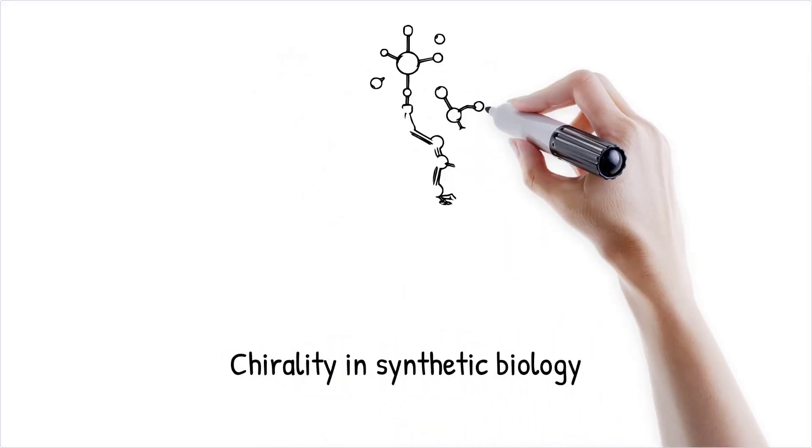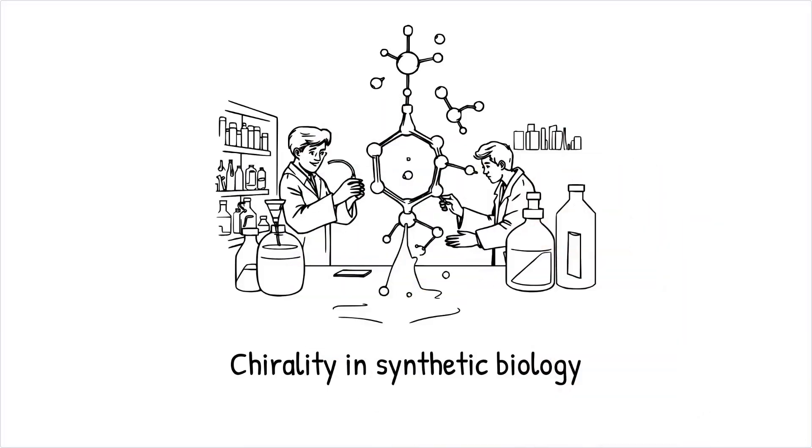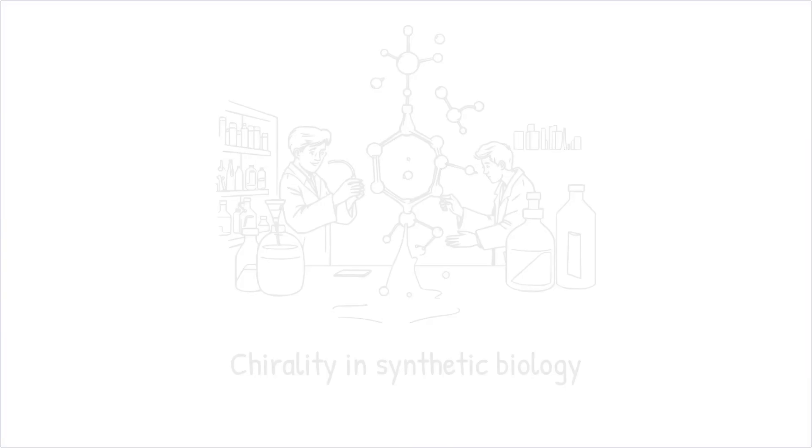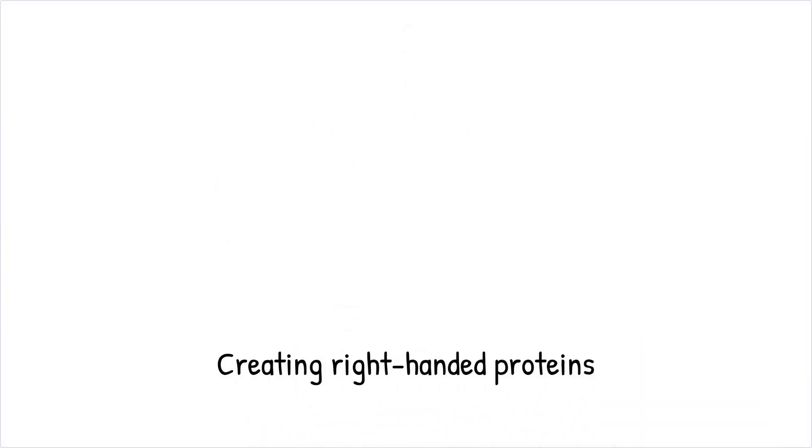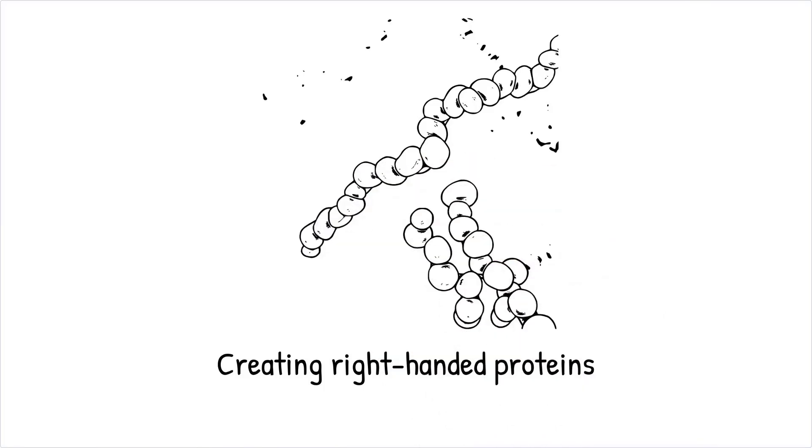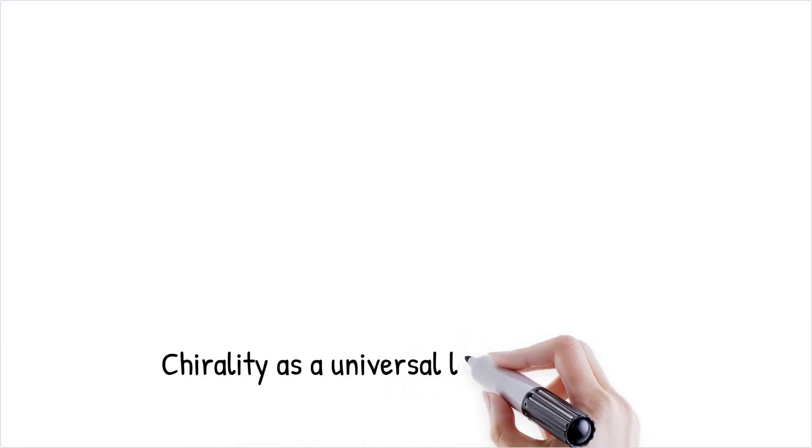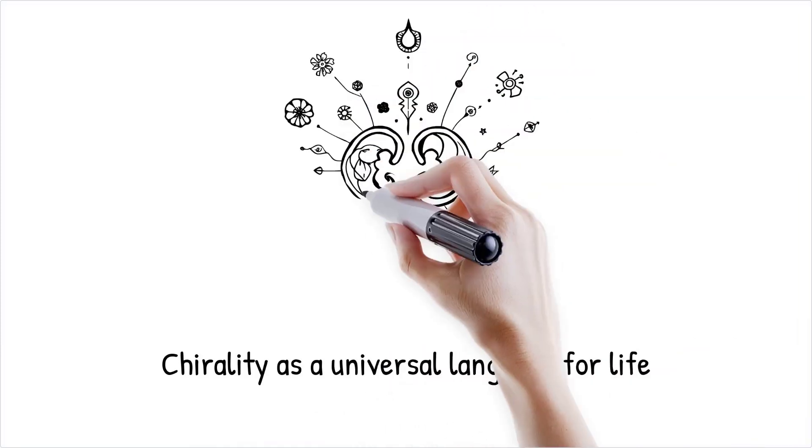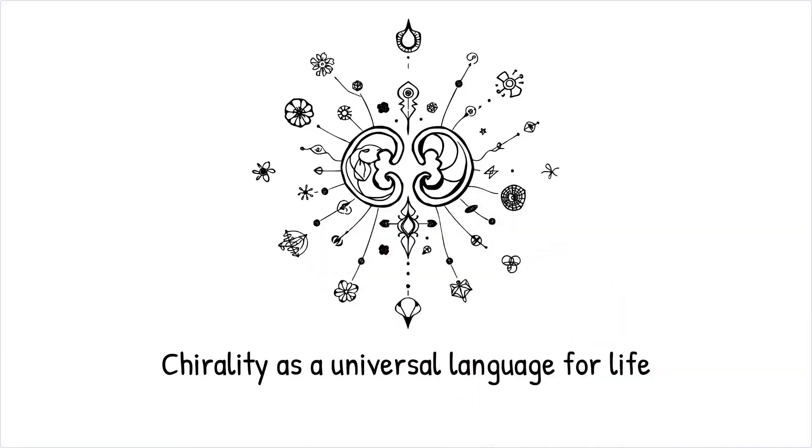Chirality's importance extends to fields like synthetic biology, where researchers are exploring how to engineer life forms using molecules of the opposite chirality, potentially creating systems immune to existing biological threats. Artificially creating right-handed proteins could lead to novel biomaterials or new forms of life. Chirality is like a universal language for life—understanding its grammar reveals how living systems are built and how they might differ in other worlds.